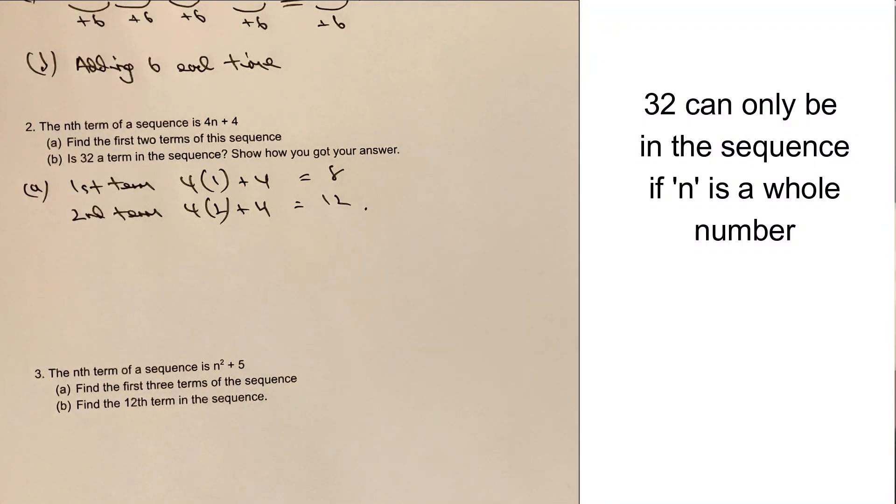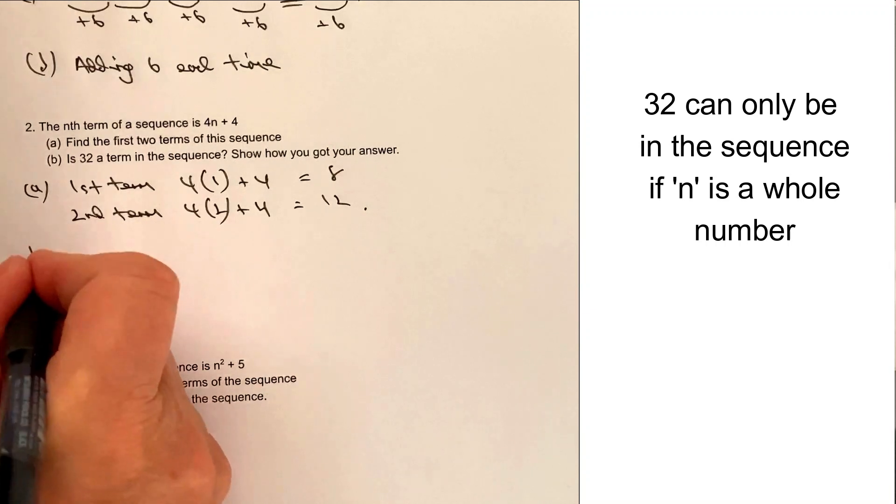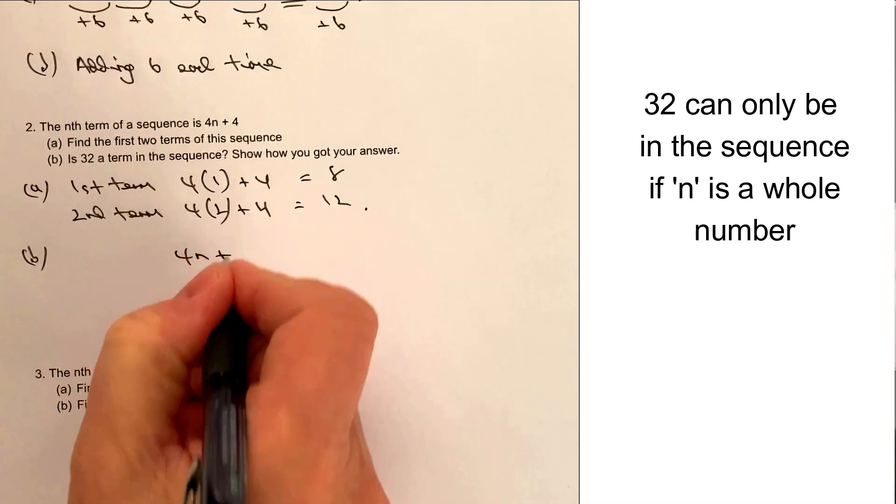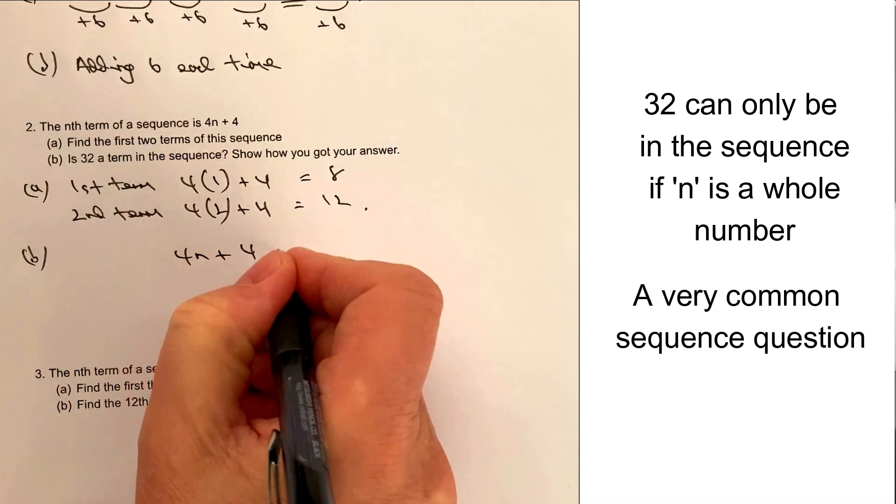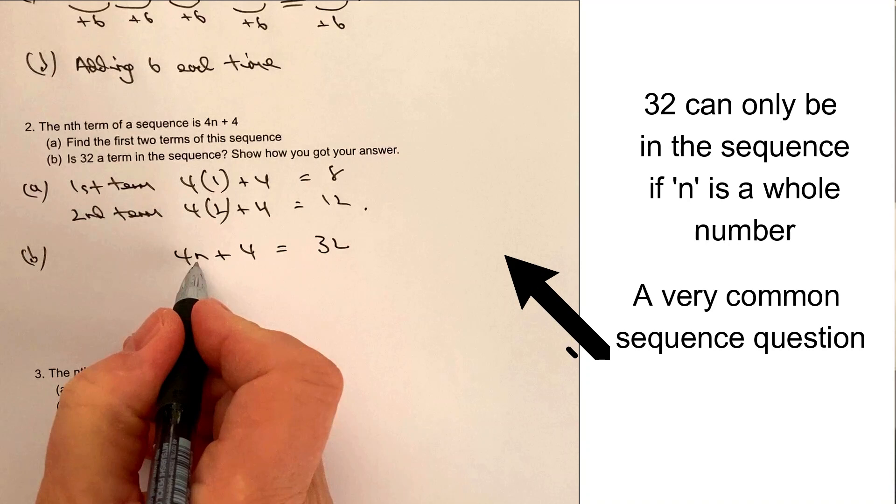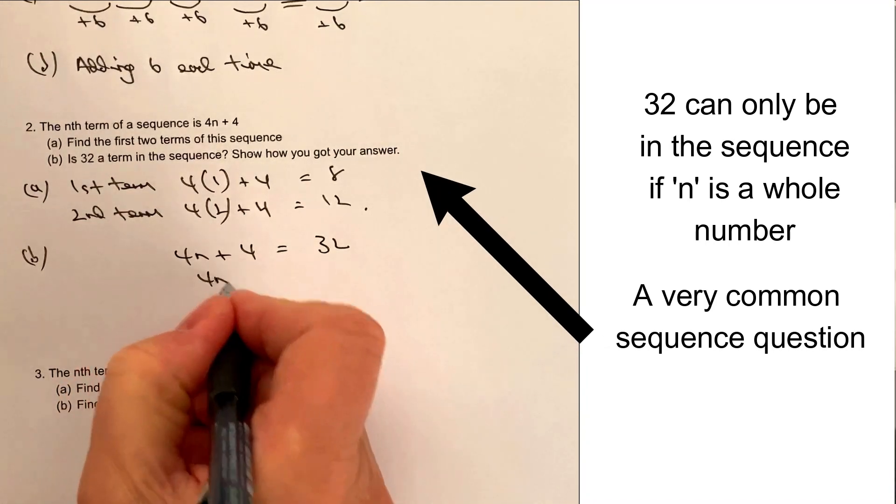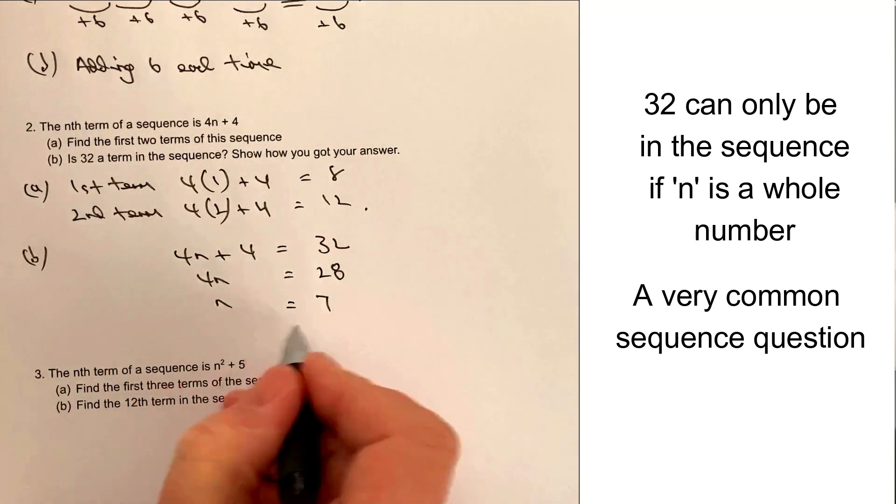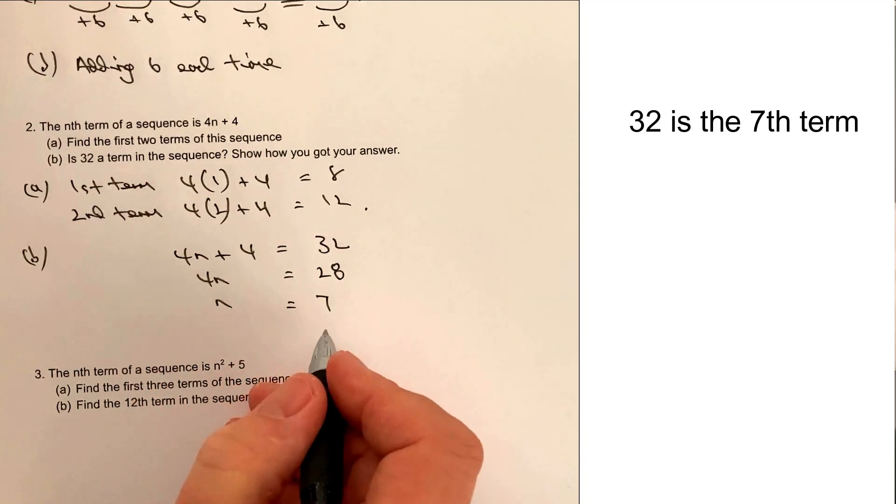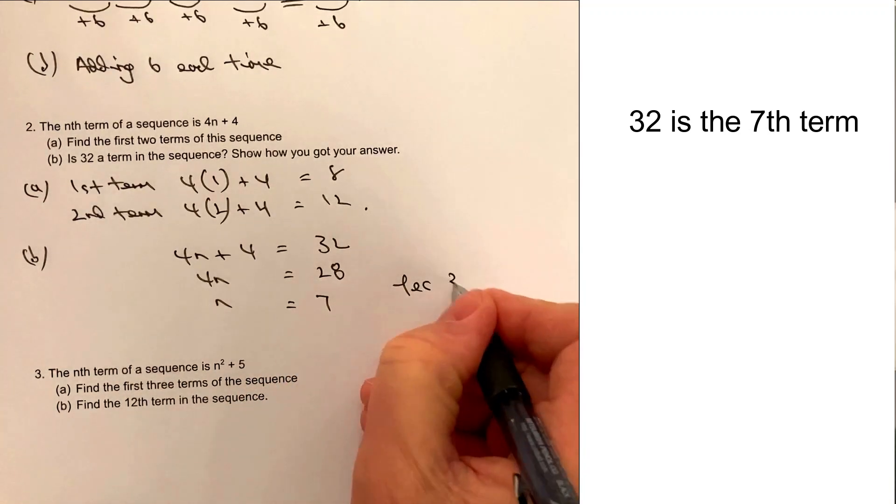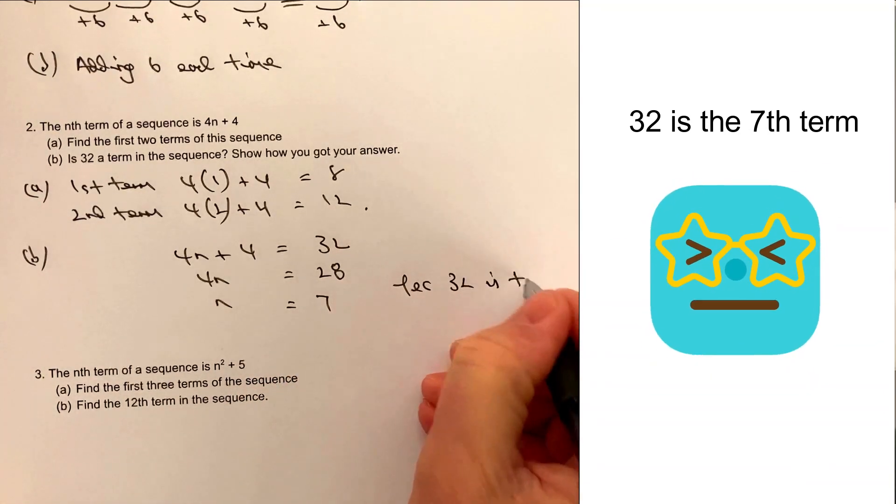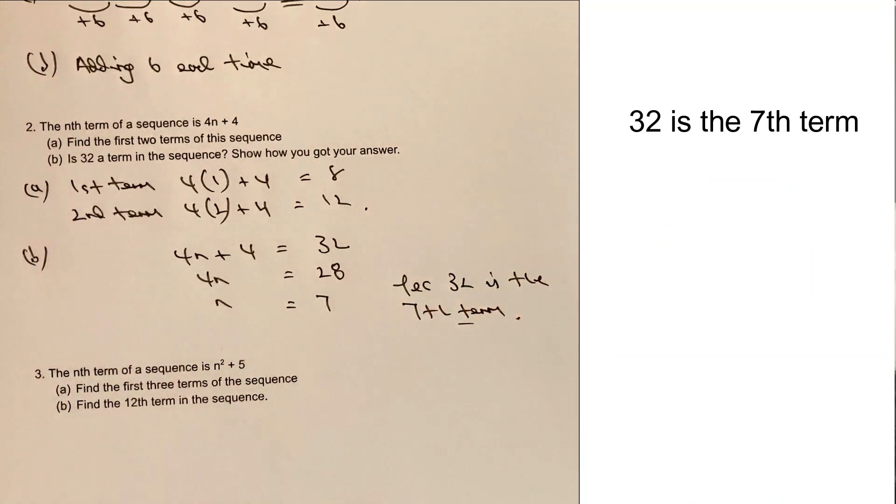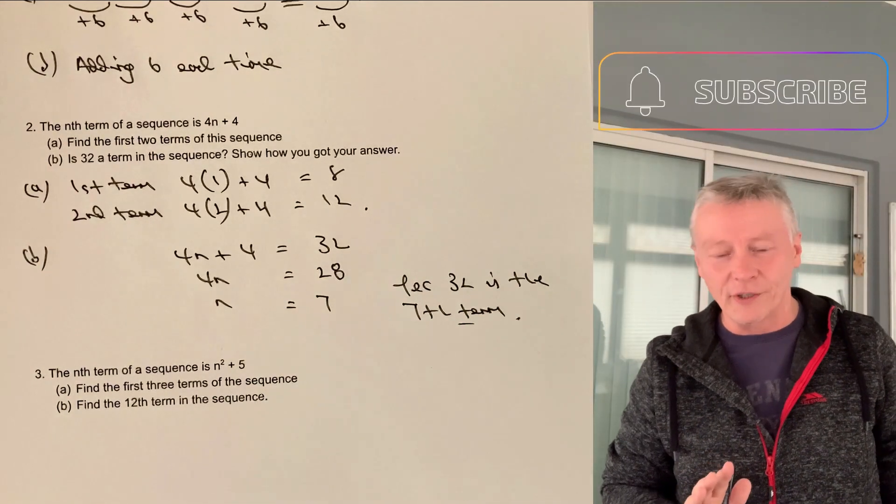Let's have a look at part b. So part b says, is 32 a term? Well, in order for it to be a term, it would have to have an actual place. In other words, we've got to say 4n plus 4 equals 32. Now, if n is a whole number, which it is, then it must have a place because n in this particular sequence is going to be the 7th place. So the answer is yes, 32 is the 7th term. That would be the answer to that particular question.